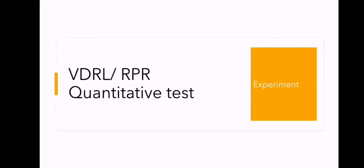Now let us begin the VDRL-RPR quantitative test that was actually performed and recorded in our microbiology lab. The quantitative test is performed to assess the quantity of antibodies present in a given serum sample at various dilutions. Presence of antibodies at higher dilutions indicates a high amount of antibodies formed; when limited to only the first few dilutions, the antibody amount is low.